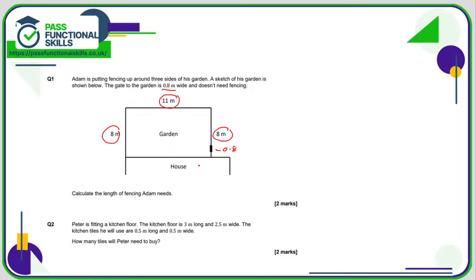If you perform that calculation, 8 plus 8 plus 11 take away 0.8, you're going to get a total of 26.2 meters.